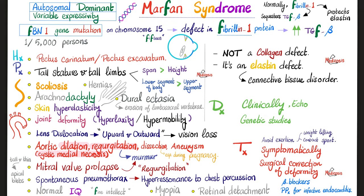Marfan syndrome follows autosomal dominant inheritance with variable expressivity — some patients have mild symptoms, others moderate, and others severe. The defect is in the FBN1 gene on chromosome 15, leading to defective fibrillin-1 protein, increased TGF-beta, and an elastin defect.